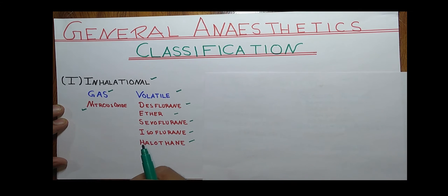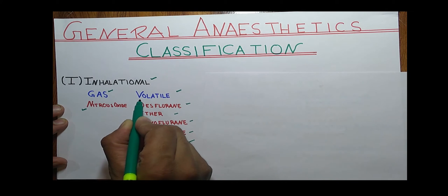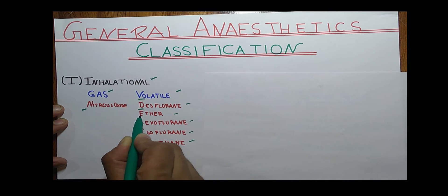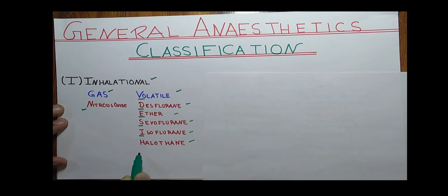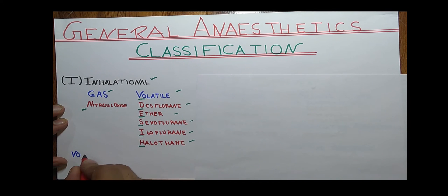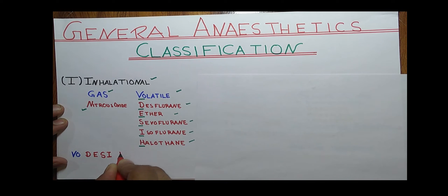Students, here is a mnemonic to learn these five volatile liquid drugs. For volatile, the mnemonic is 'VODESH': V for volatile, D for desflurane, E for ether, S for sevoflurane, I for isoflurane, and H for halothane. So we can remember it as 'Whoa, D-E-S-I-H' — a simple trick to learn the volatile liquids of inhalational anesthetics.